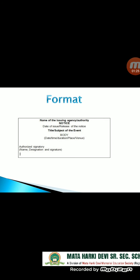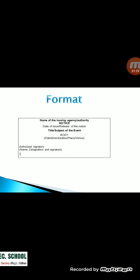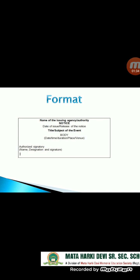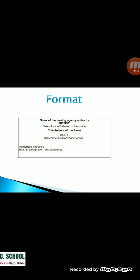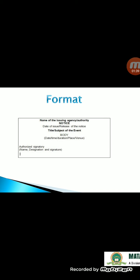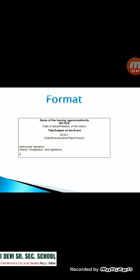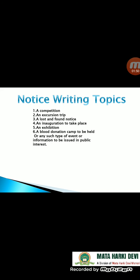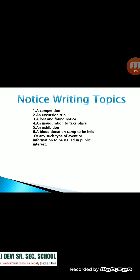Then in the next line, start from the extreme left hand side with the body of the notice. After completing the body, leave one line, then write on the extreme left hand side the authorized signatory — the name, designation, and signature of the person who is issuing the notice.